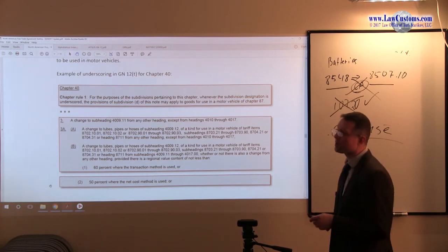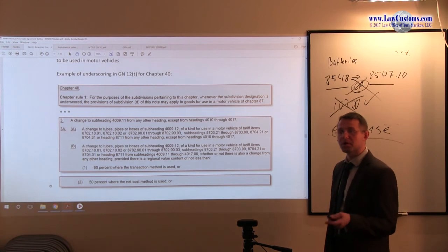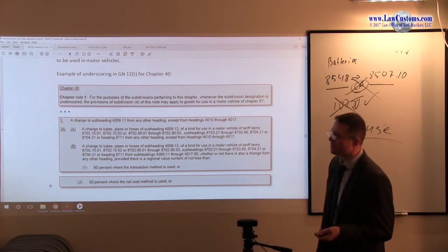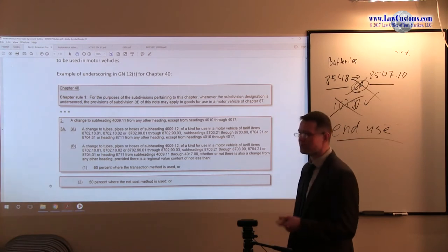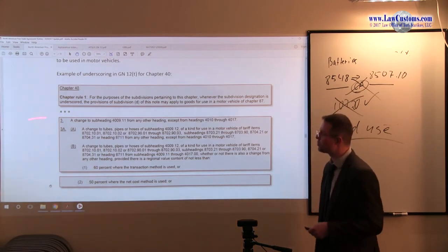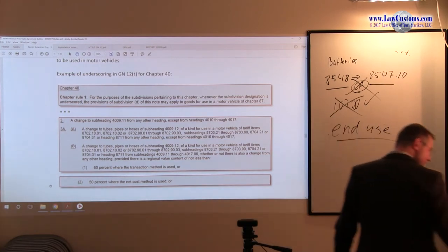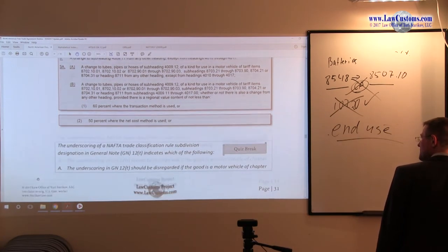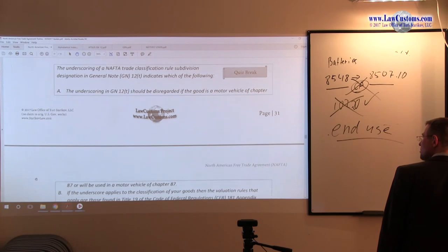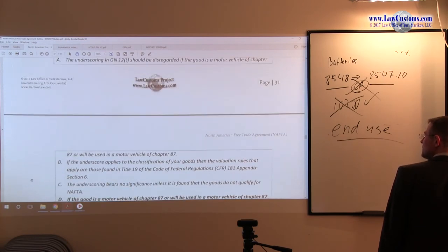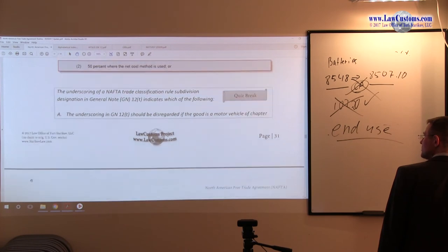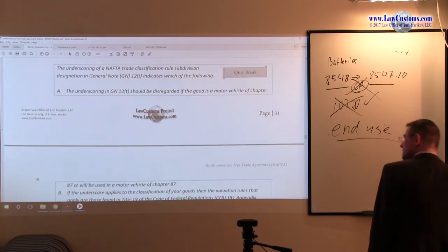Here we have rubber products, which - rubber industry is heavily dependent and intertwined with automotive industries. Just think tires, for example. So this is of no surprise. And having this in mind, you should be able to answer the following question. So let me give you - let's take a look at this quiz break.